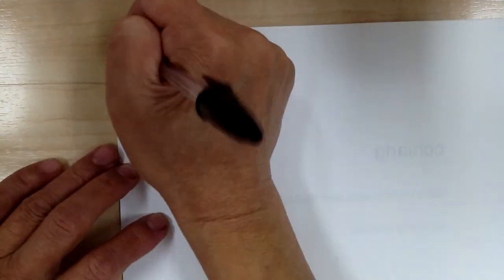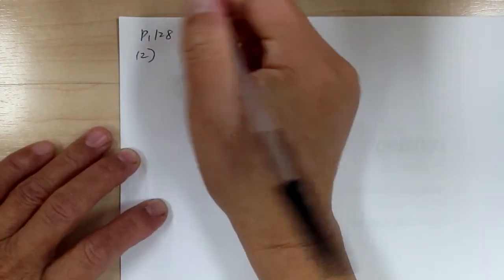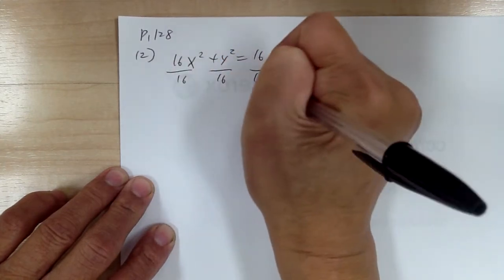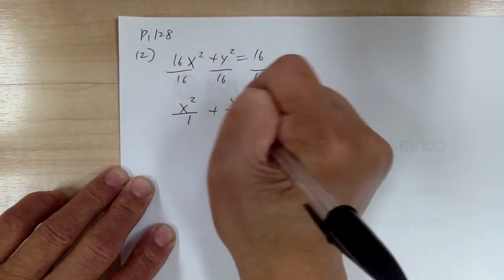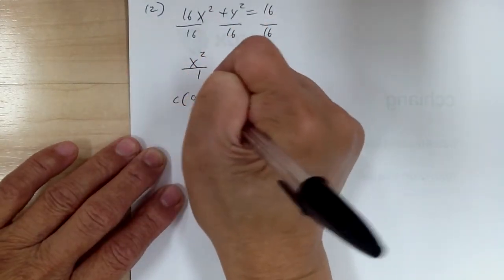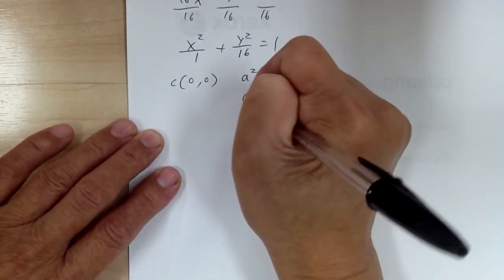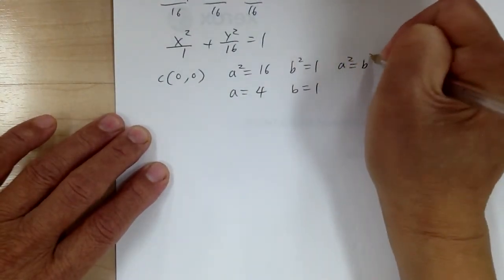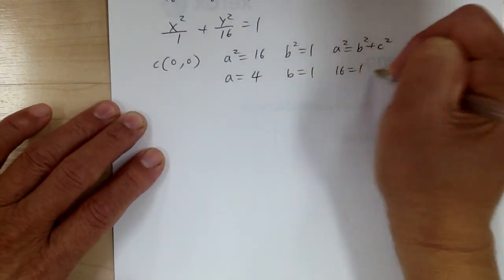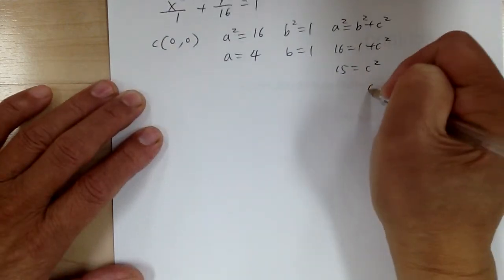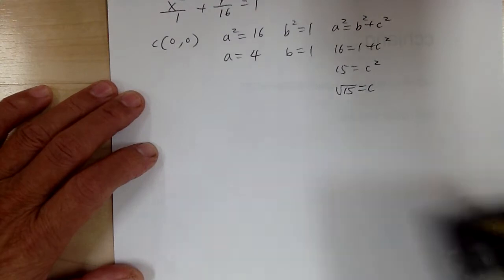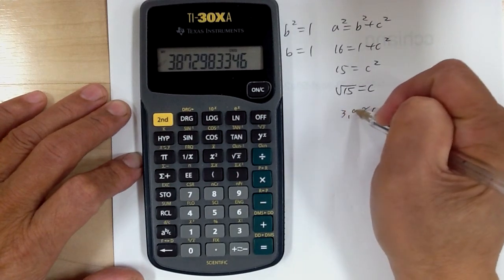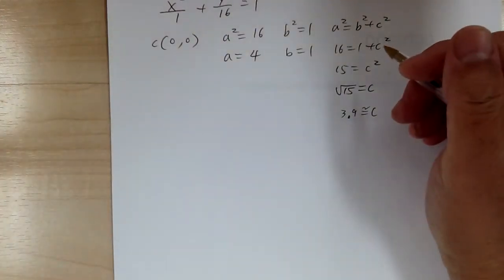Let's go to number 12. We have 16x squared plus y squared equal to 16. Put in standard form by dividing by 16: x squared over 1 plus y squared over 16 equal to 1. Center at (0, 0). A squared equals 16, so a equals 4. B squared equals 1, so b equals 1. A squared equals b squared plus c squared: 16 equals 1 plus c squared, so c squared equals 15, c equals √15, about 3.9 — very close to the vertex.